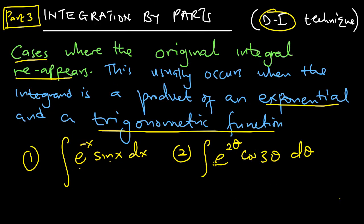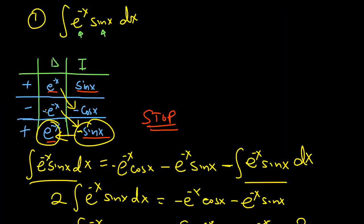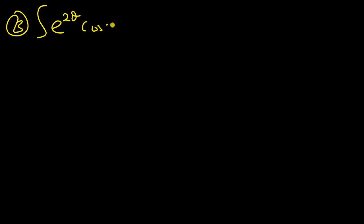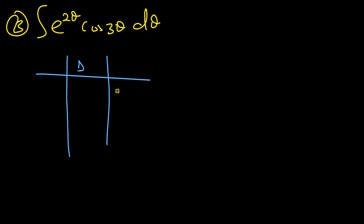Let's look at the other problem: the integral of e^(2θ) cos(3θ) dθ. Again, we have an exponential function and a trigonometric function, so we suspect the integral will reappear. Let's draw the DI table. I'll put e^(2θ) on the D side and cos(3θ) on the I side. You can try interchanging them to see if it has an effect — it might or might not.